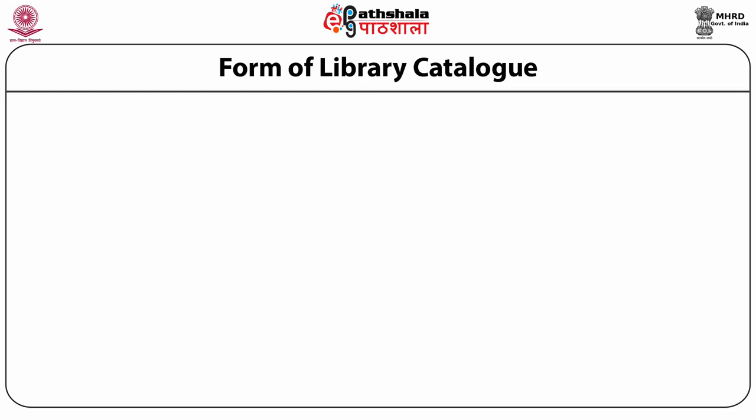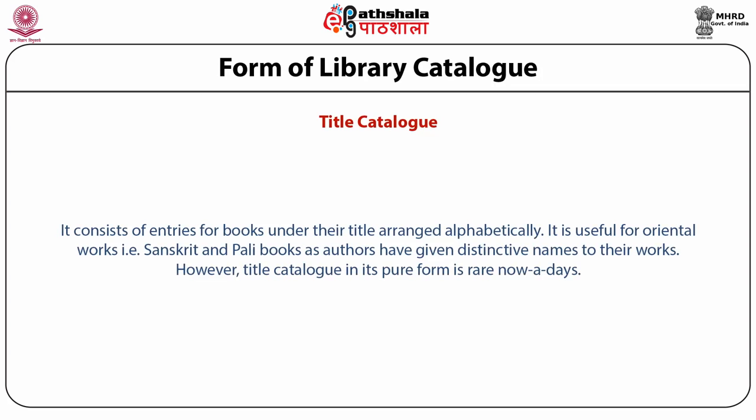The fourth type is the title catalog. It consists of entries for books under their titles, arranged alphabetically. It is useful for oriental works, such as Sanskrit and Pali books, as authors have given distinctive names to their works. However, title catalog in its pure form is rare nowadays.